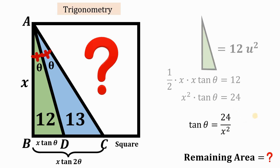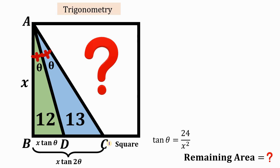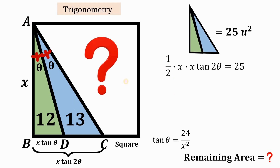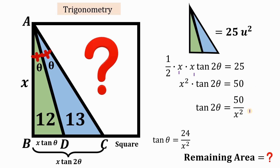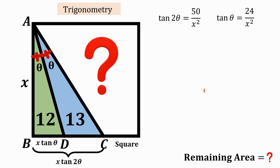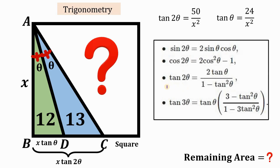Using triangle ABC to find tan(2theta): one-half × x × x·tan(2theta) = 25, which gives x²·tan(2theta) = 50, so tan(2theta) = 50/x². We now apply the double-angle identity: tan(2theta) = 2·tan(theta) / (1 − tan²(theta)). Substituting, we get 50/x² = 2×(24/x²) / (1 − (24/x²)²).